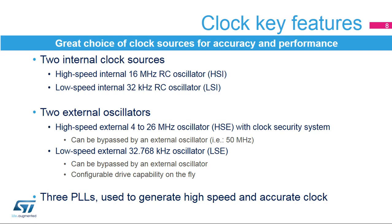The RCC offers a large choice of clock sources, which can be selected depending on low power, accuracy, and performance requirements. STM32F7 devices embed two internal clock sources: a high-speed internal 16 MHz RC oscillator, or HSI, and a low-speed internal 32 kHz RC oscillator, or LSI.